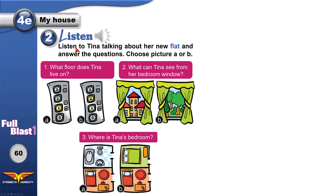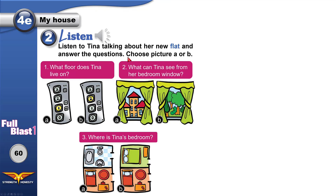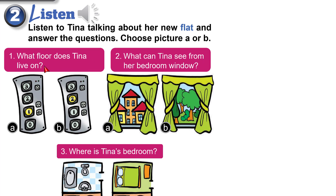Now listen. Listen to Tina, a girl, talking about her new flat. A flat is a place where people live and it is part of a larger building. In American English, we say apartment. Answer the questions — choose A or B. What floor does Tina live on? Does she live on the first floor or the second floor? What can Tina see from her bedroom window — houses or trees in a garden?